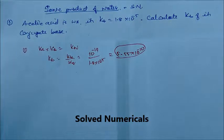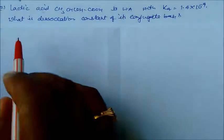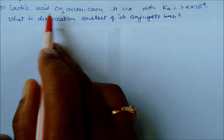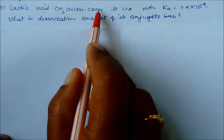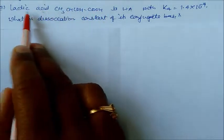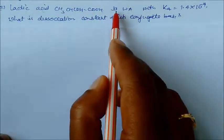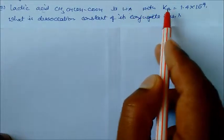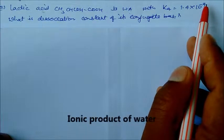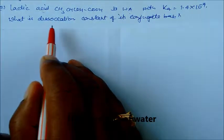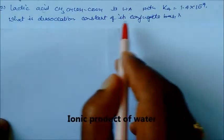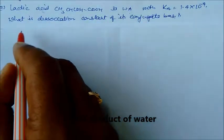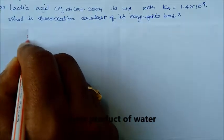Lactic acid — the formula for lactic acid is shown here. It is again a weak acid whose Ka is given as 1.4 × 10⁻⁴. We have to find the dissociation constant of its conjugate base. So again we can write Ka × Kb = Kw.